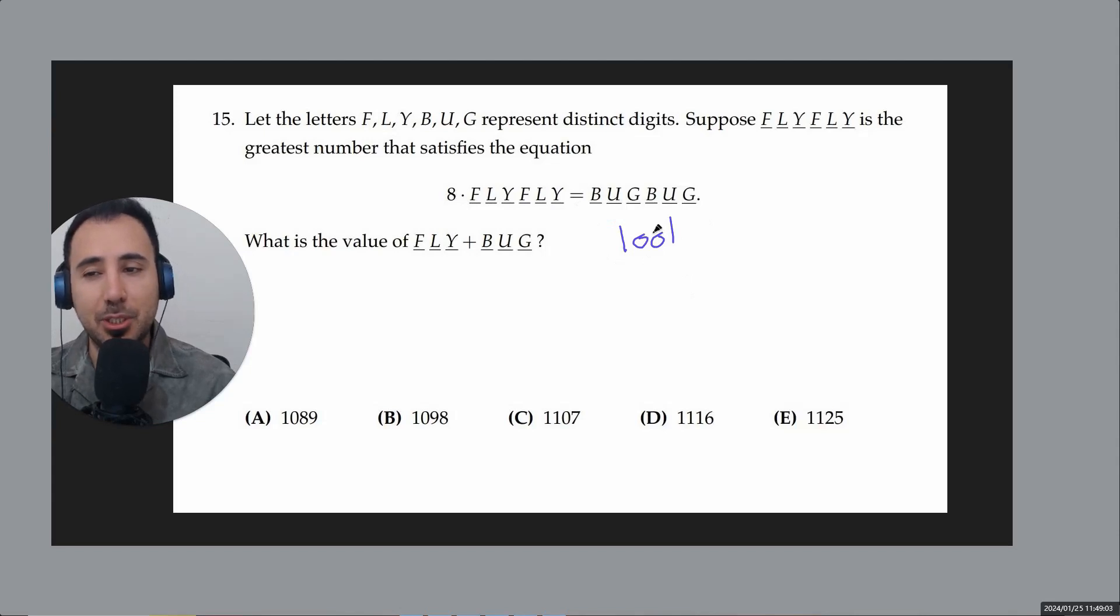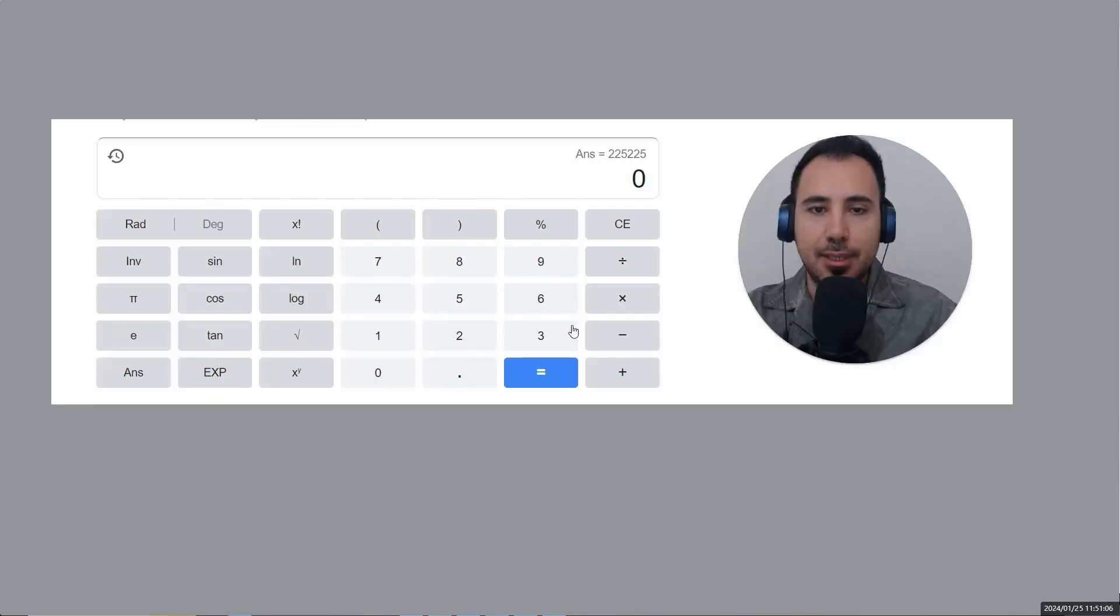...one thousand and one, right? That these numbers are being multiplied by something like this. If you don't know, let's review a little and then come back and deal with the question. Now if I go and press one two three and multiply this by a thousand and one, what do I get?